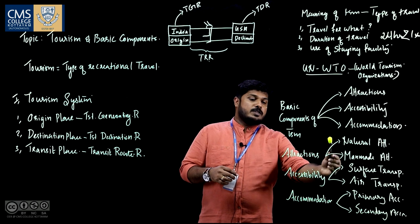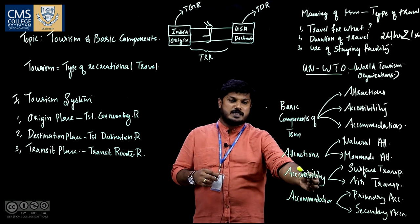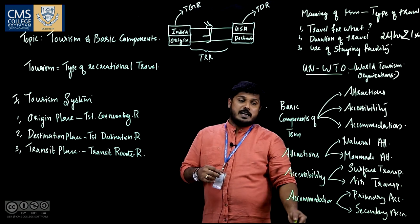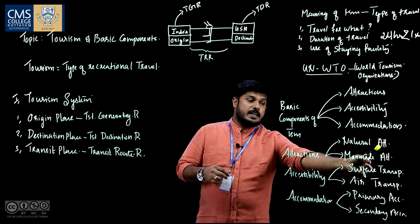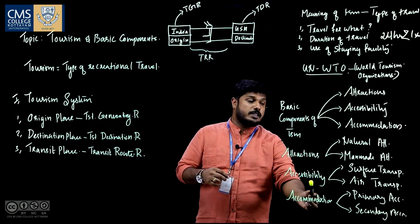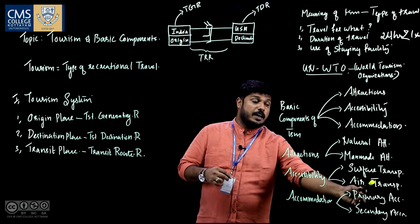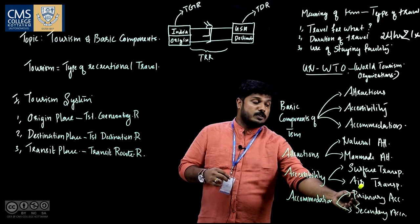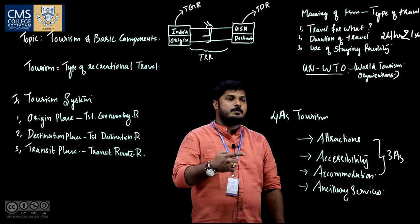These are the major subdivisions of the basic components. To recap: attractions are classified into natural attractions and man-made attractions. Accessibility is classified into surface transportation and air transportation. And accommodation is classified into primary accommodation and secondary accommodation.